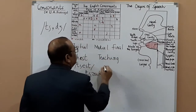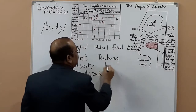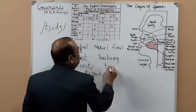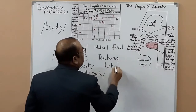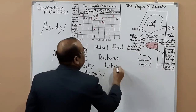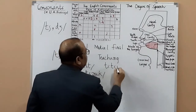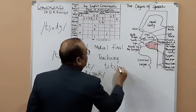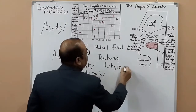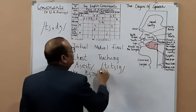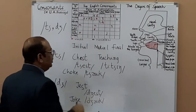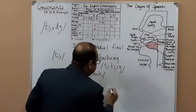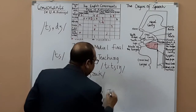You write 'teaching' like this: long T, then the CH sound, then ING — T-CH-ING: teaching. And for the J sound medially: 'judging'. You write JA, and two J sounds are coming — JU-JU — judging.